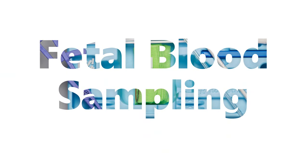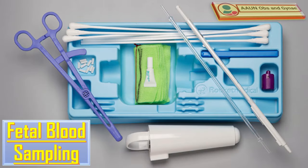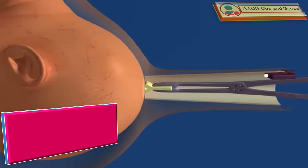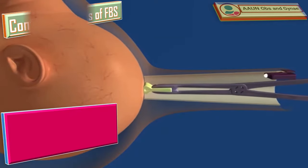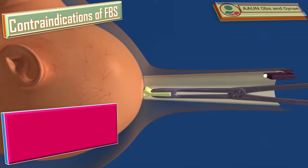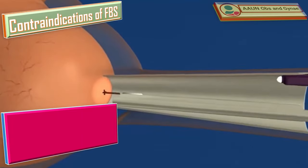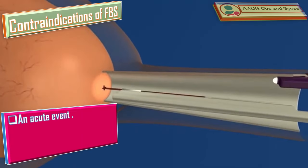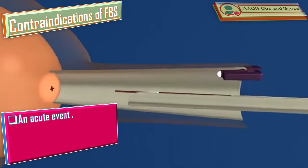Today we will talk about fetal blood sampling, which is a procedure to take a small amount of blood from the fetus during pregnancy. What are the contraindications of fetal blood sampling?